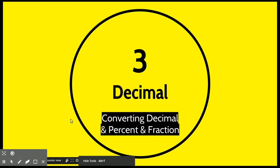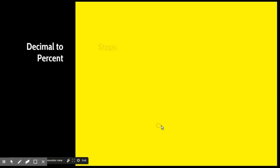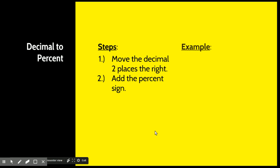And last, converting decimals to percents and fractions. When we are converting a decimal to a percent, we need to move the decimal two places to the right and then add the percent sign. So it's very quick. If I have 0.75, I'm going to move it one and two places over to the right, and that simply becomes 75 percent.